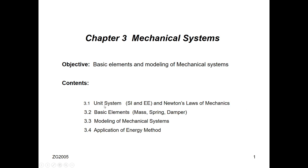We are going to review the mechanical system units, focusing only on SI units. Then we will review Newton's laws of mechanics, which we will use to derive the equation of motion. We'll go through the elements — mass, spring, and damper — and how to use the energy method in addition to Newton's laws to derive the equation of motion.